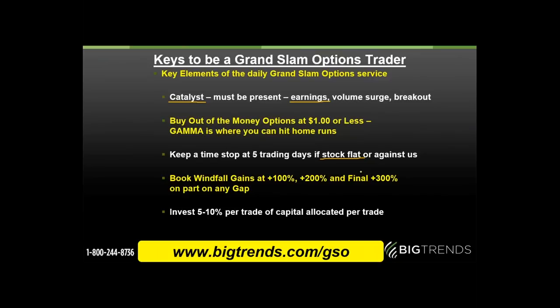Five to no more than 10% of your capital allocated for trading this Grand Slam aggressive options strategy should go into any one trade. In our model portfolio starting with $10,000, that means $1,000 per trade. If you're starting with $5,000, don't put more than $500. That still gets you into about five contracts at a dollar each. You can sell down gradually using the same rules we advocate for getting out of winning trades. We also give you weekly video training so you know exactly where we stand.